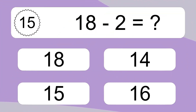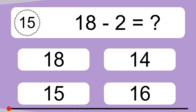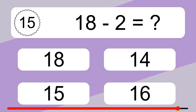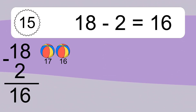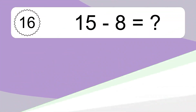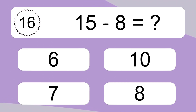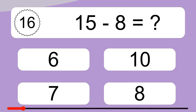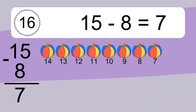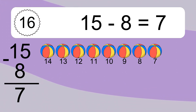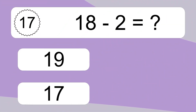18 minus 2 equals what? 18 minus 2 equals 16. Let's count it. 17, 16. 15 minus 8 equals what? 15 minus 8 equals 7. Let's count it. 14, 13, 12, 11, 10, 9, 8, 7.